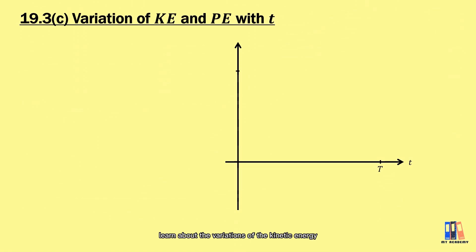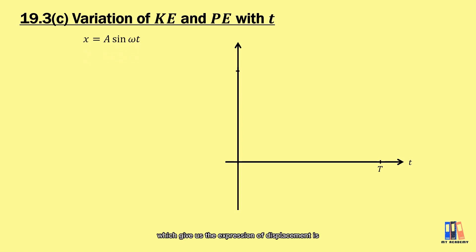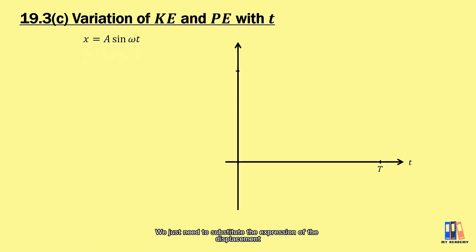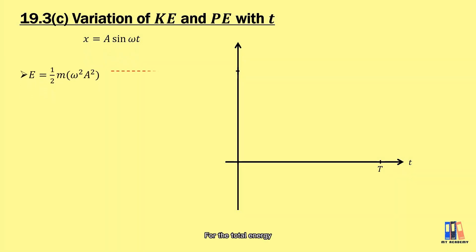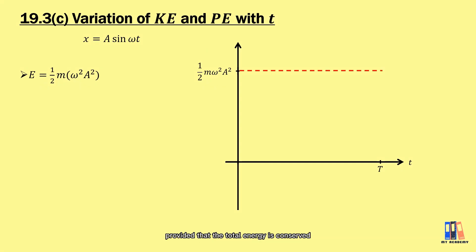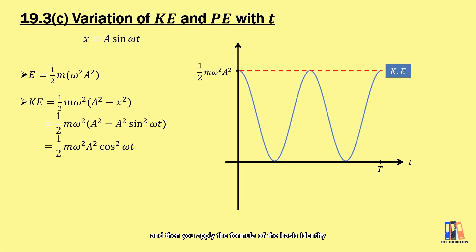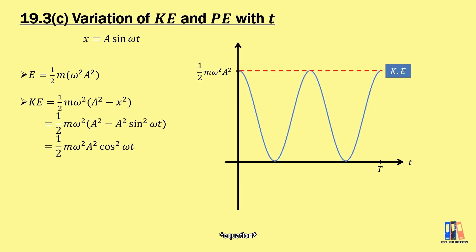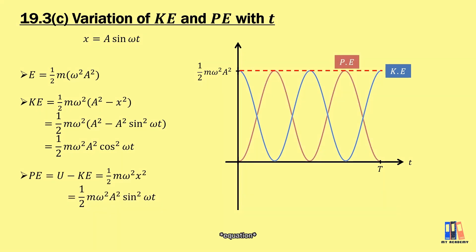Now let's look at the variations of kinetic energy and potential energy with time. We recall the displacement expression — assuming the object starts at the point of equilibrium, giving x = a sin(ωt). We substitute this into each energy formula. The total energy doesn't depend on displacement and is always constant. For kinetic energy, applying the double-angle identity from trigonometry gives KE = ½mω²a² cos²(ωt). For potential energy, PE = ½mω²a² sin²(ωt).